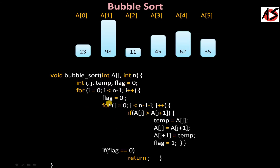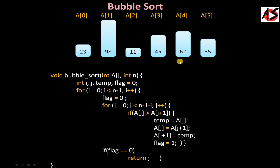Let's understand it line by line. In bubble sort, we start by comparing the first two elements. If the first element is smaller than the next, we don't need to do anything. If the first element is bigger, we swap. We continue through the list — this is the first pass. At the end of the first pass, the biggest element will be at the end. Then we do the next pass with the same process, and after the second pass, the second highest element is at the second last position, and so on.